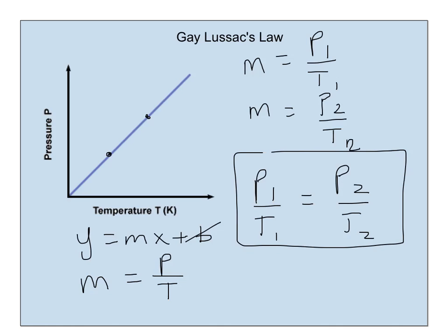p1 over t1 equals p2 over t2. This only works if the temperature is in Kelvin. So if we have a gas at a given pressure and temperature, and we change the temperature, we can calculate what should happen to the pressure. Again, as long as that temperature is in Kelvin.